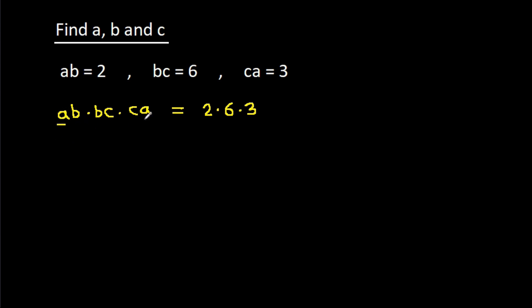And A times A will be A squared, times B times B will be B squared, times C times C will be C squared. It is equal to 2 times, and 6 is 2 times 3, times 3.